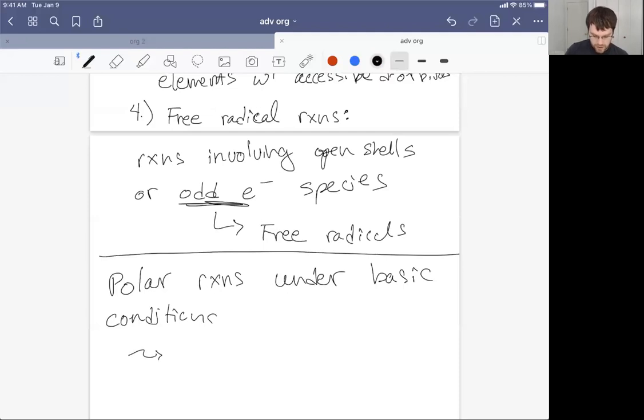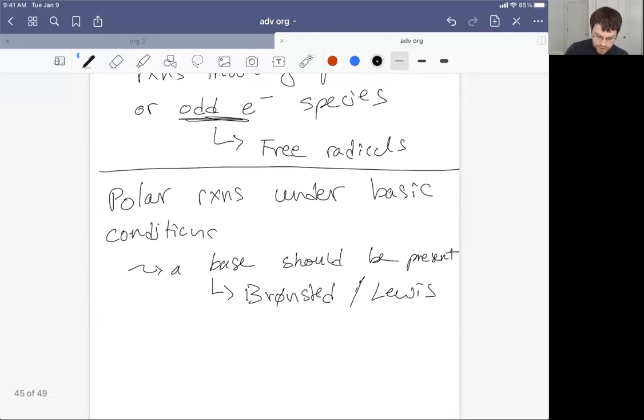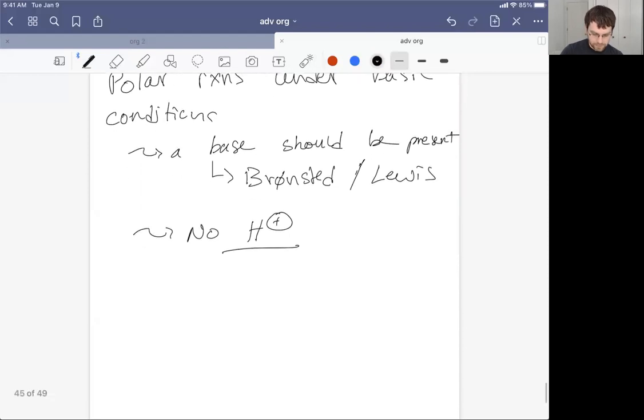We have to recall that a base should be present, and we're going to expand away from just Bronsted bases to also include Lewis bases. The other key takeaway when thinking about polar reactions under basic conditions is that we're not going to have H plus available. Any H plus that's even transiently formed will be destroyed by the base that's being used to facilitate the transformation.